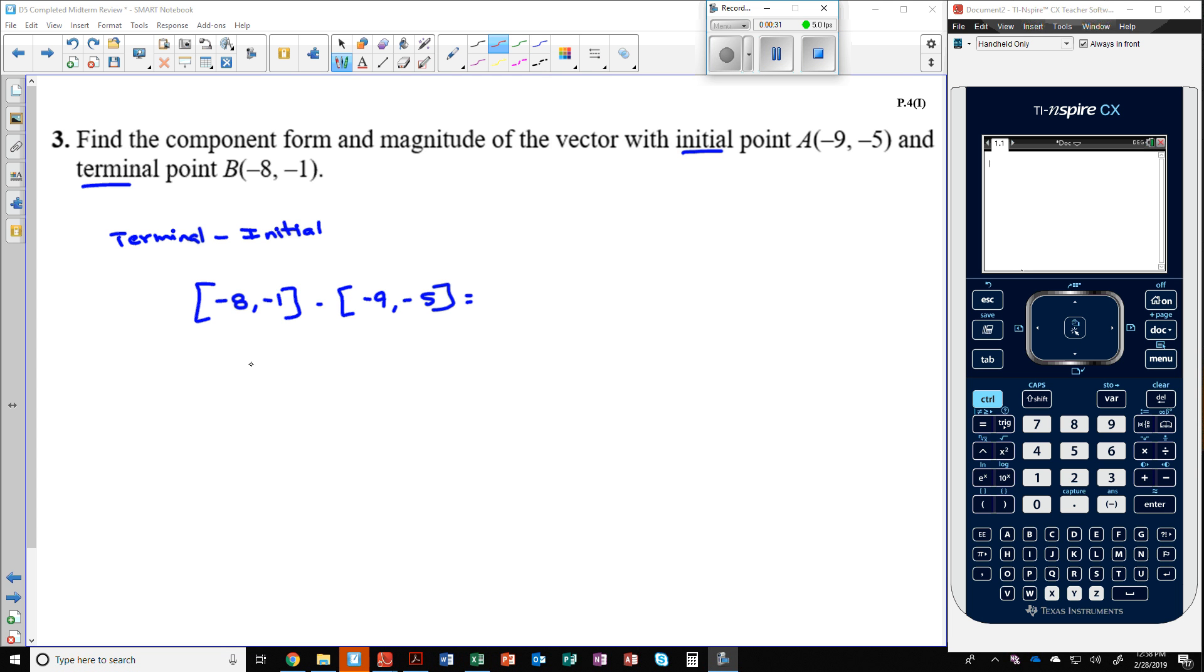You can type this in the calculator like we did number 2, but negative 8 minus negative 9, those two become positives. I'm going to distribute that negative through here. Negative 8 plus 9 is 1 and negative 1 plus 5 is 4. So this is the component form right here.